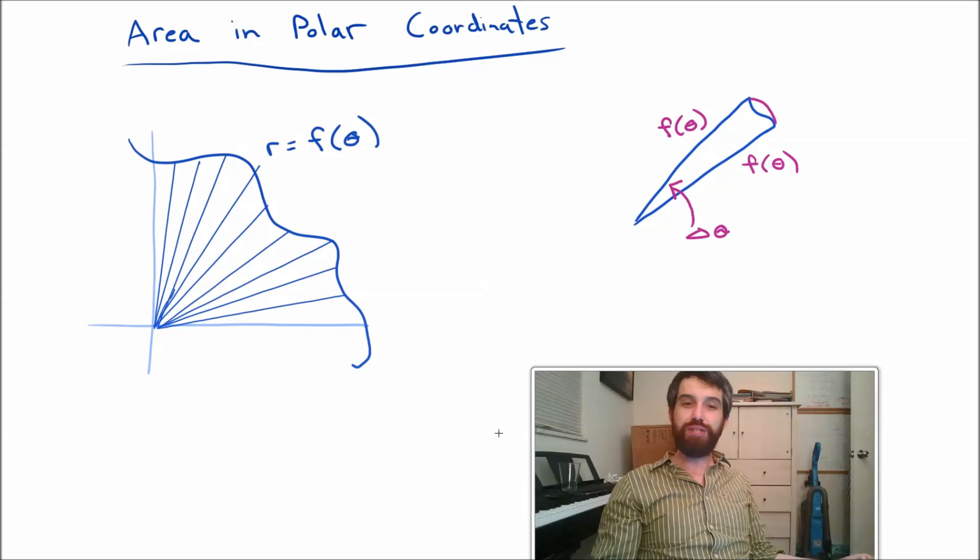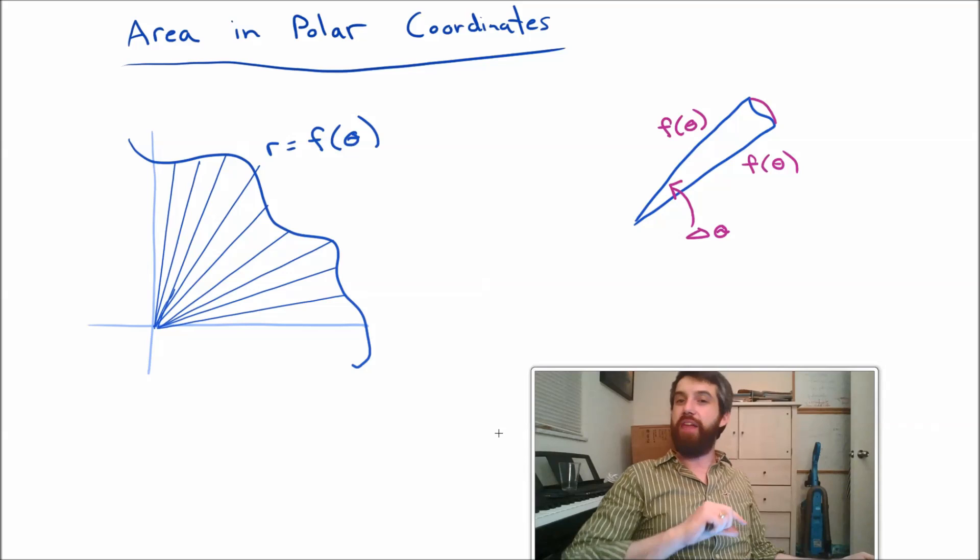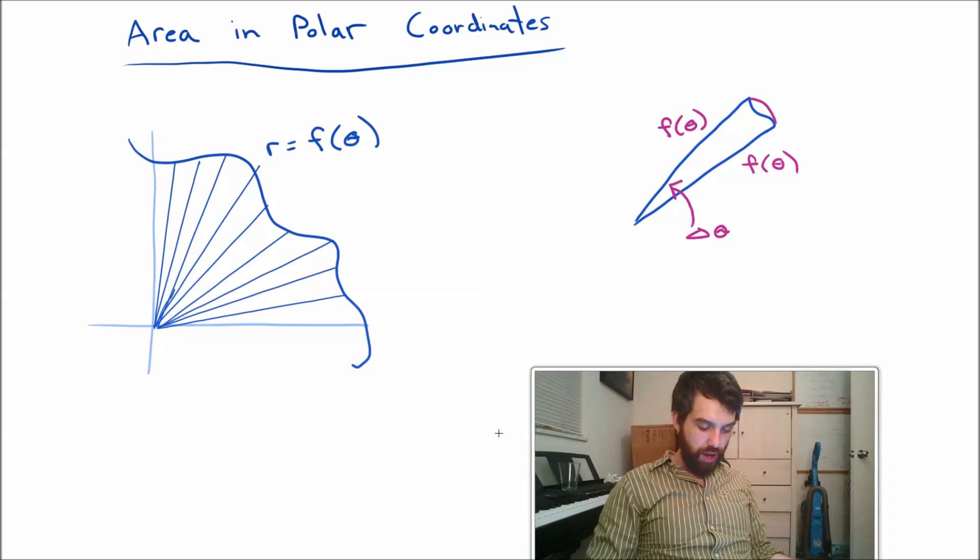But our approximation was going to be approximated by triangles. Same thing I'm going to do here. I'm going to imagine it's this really skinny pizza slice with a little bit of a circle around the outside edge, and then two spokes, two edges of my pizza slice that had the same length.